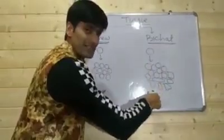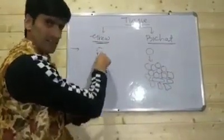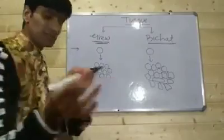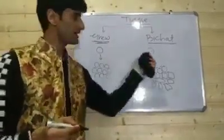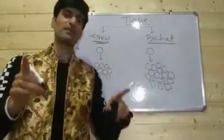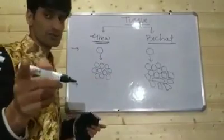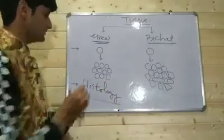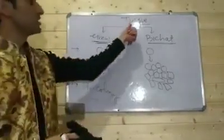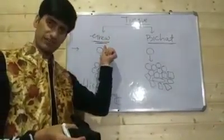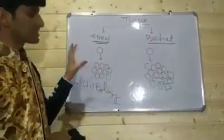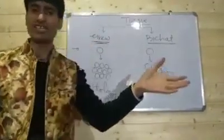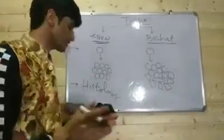A group of similar or dissimilar cells having common origin and performing similar functions is called a tissue. The study of tissues is called histology. Term 'tissue' for plants was given by Grew and for animals by Bichat.